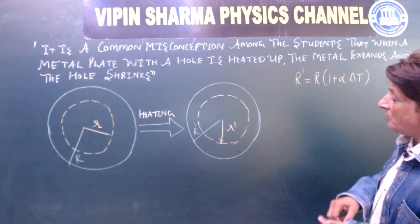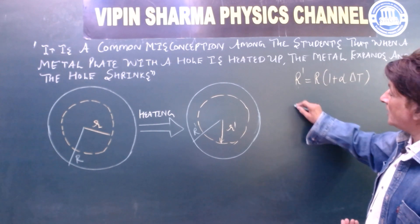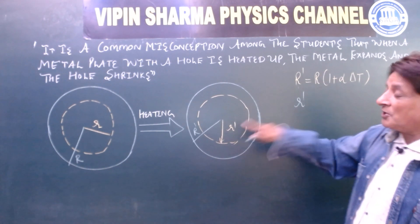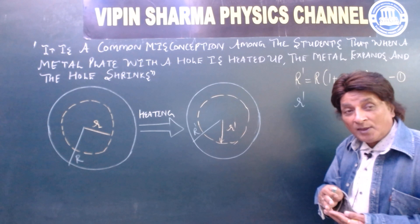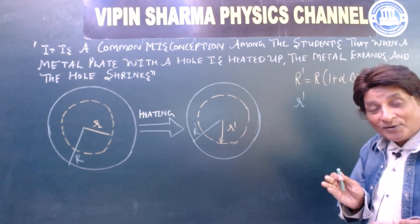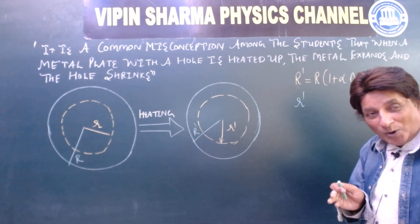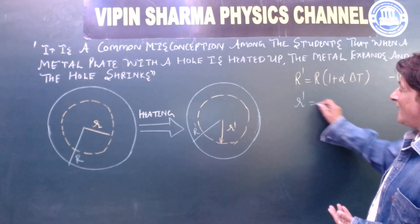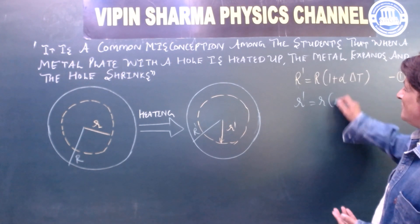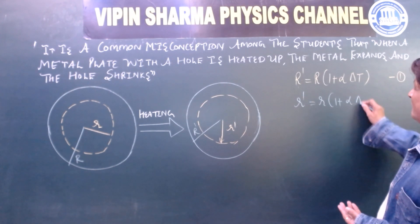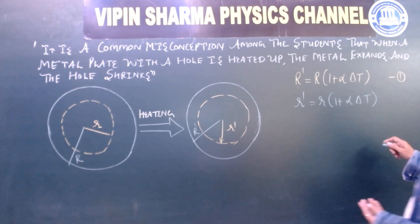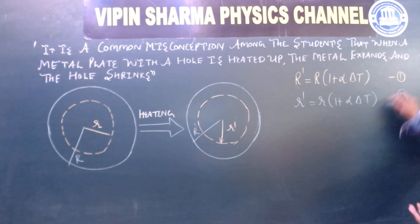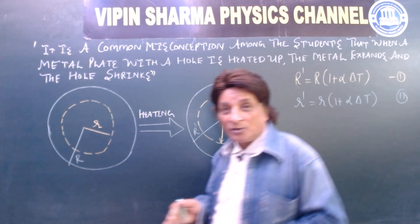Now we talk about r dash, the radius of the inner hole after heating. That is equal to r into 1 plus alpha, is same, material is same, delta t. Alpha is called coefficient of linear expansion, delta t is called temperature rise.